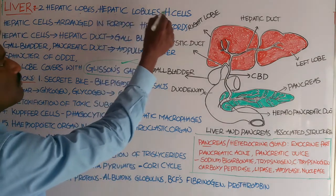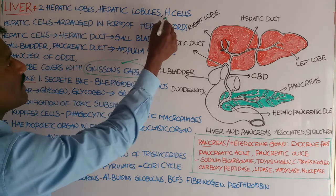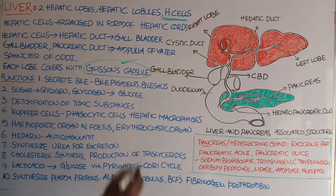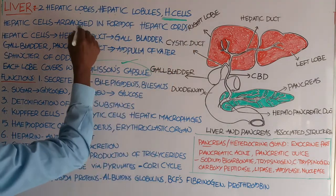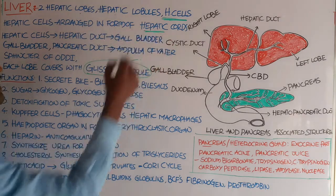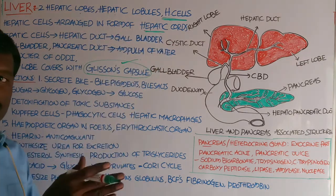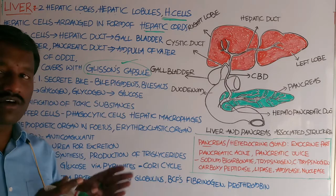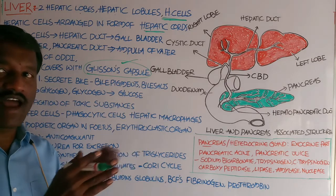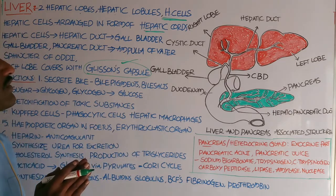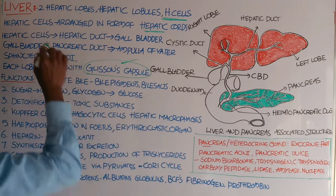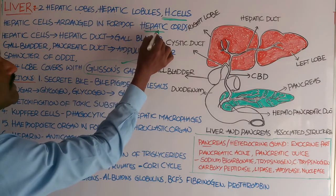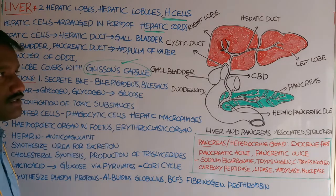Each hepatic lobule consists of hepatic cells. These hepatic cells are arranged in the form of hepatic cords — cords meaning a straight line-like arrangement.